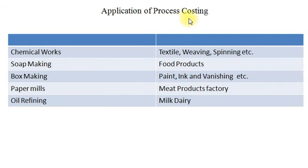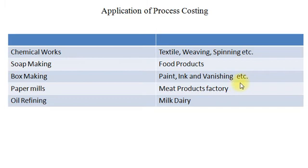Application of Process Costing Method: The process costing method is applied in chemical works, soap making companies, box manufacturing companies, paper mills, oil refining, textile weaving and spinning mills, food products, paint, ink and varnishing, meat producing factories and milk dairies. All these industries use the process costing method to ascertain the final cost and selling price of their finished product.